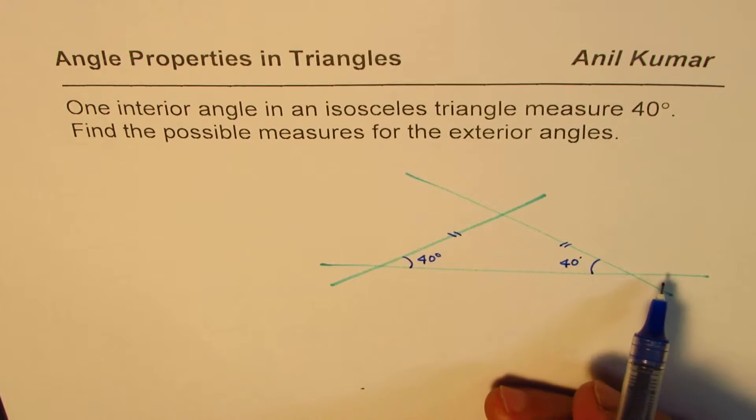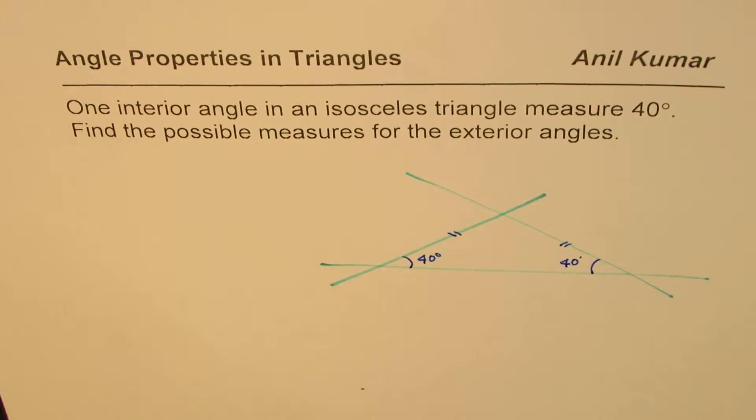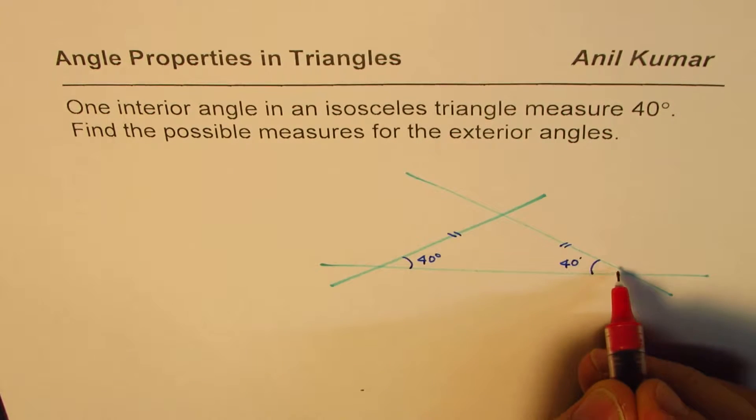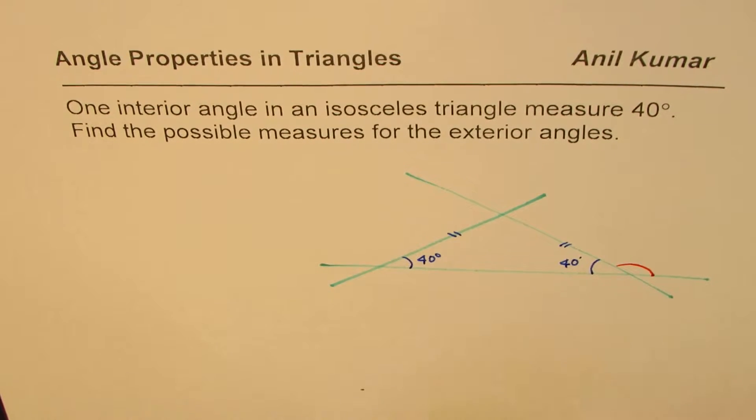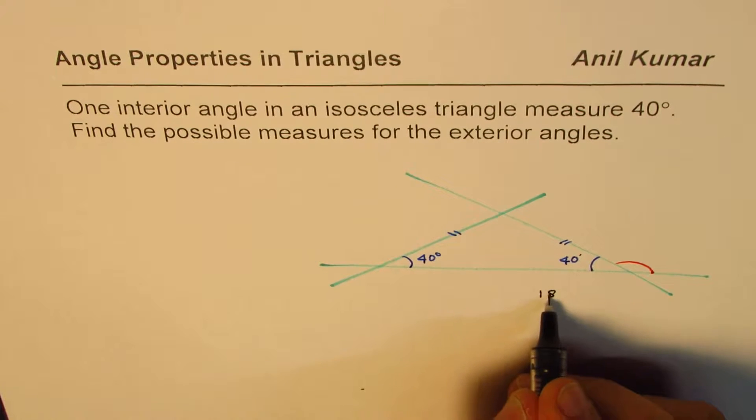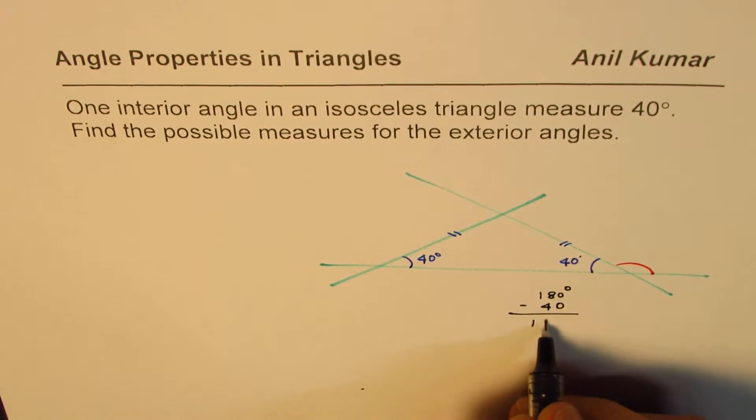Once we know that these two angles are 40 degrees, we can find the exterior angles. What should be this angle which is one of the exterior angles? That angle should be equal to 180 degrees minus 40 degrees, so that is 140 degrees.